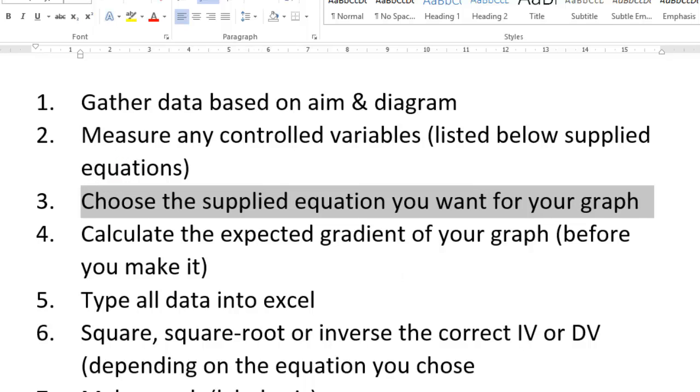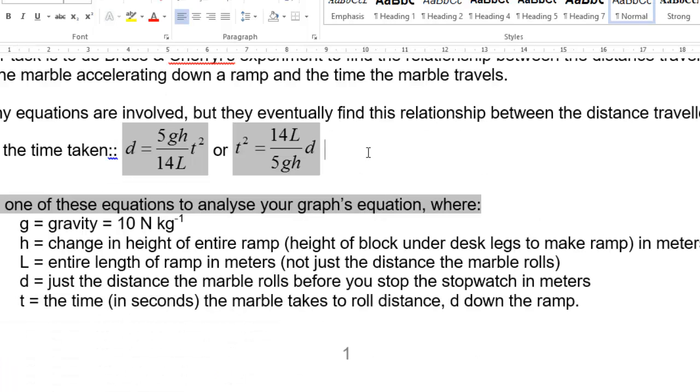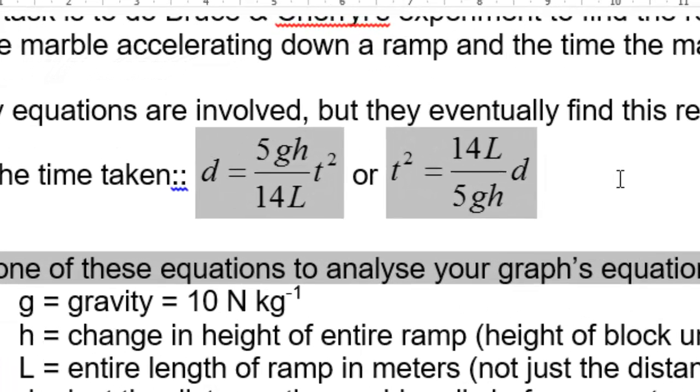Then you've chosen which equation you want to use to pair up with the graph that you're going to make. In the instructions, there are two equations here. I'm going to choose the second equation, the t squared equals 14L over 5GH times d.